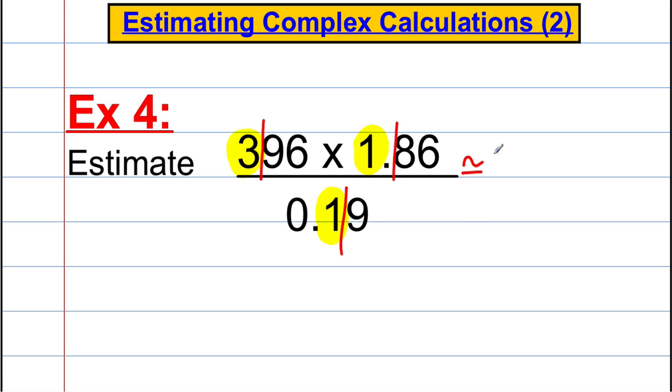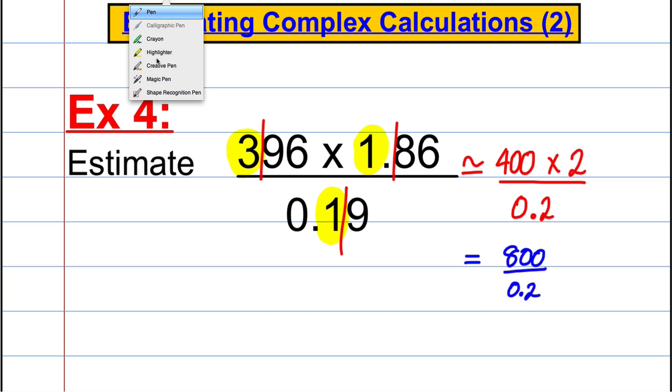This calculation is approximately equal to 400 multiplied by 2, and that divided by 0.2. That's therefore equal to 800 divided by 0.2. Now you'll remember I said in example 2, we don't like dividing by decimals. It's difficult to divide by decimals.